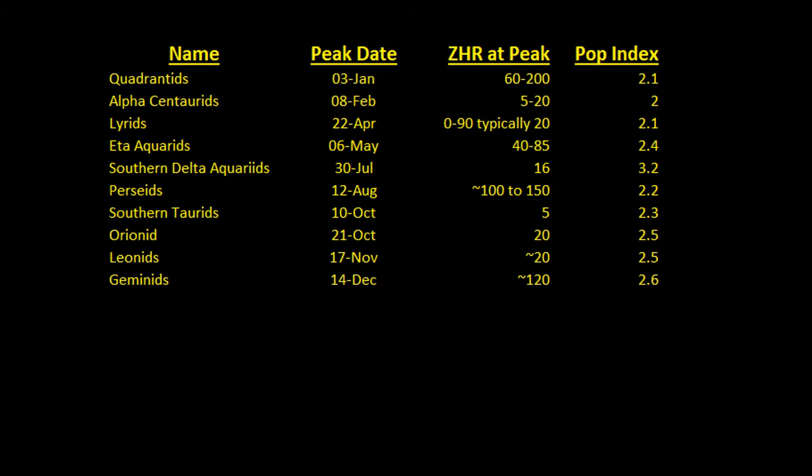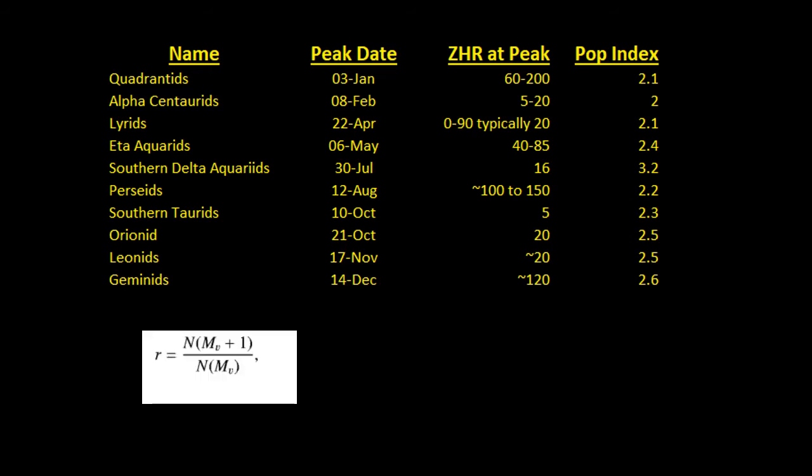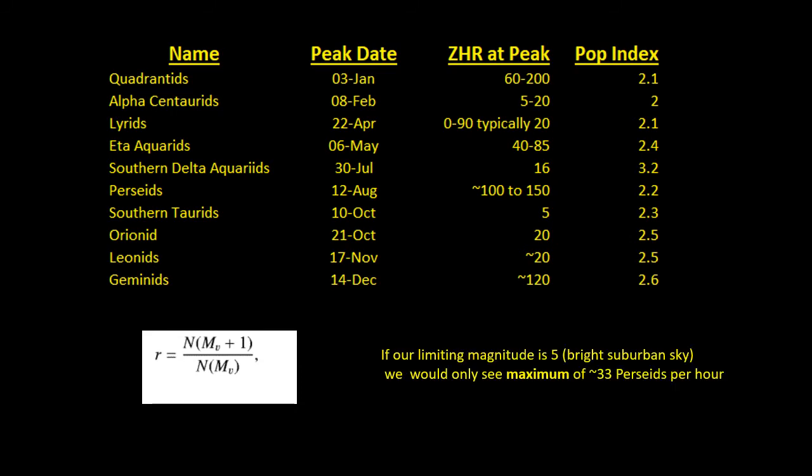The population index is the increase in the number of meteors you'd see if you went to a magnitude one fainter, or alternatively the decrease if you moved to one magnitude brighter. If you have a limiting magnitude of five, for instance, you'd only expect to see 33 Perseids per hour.